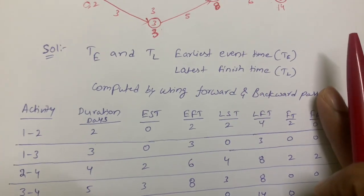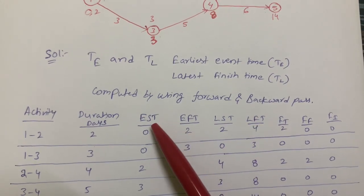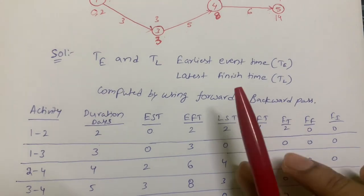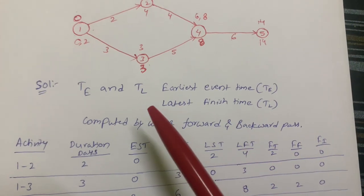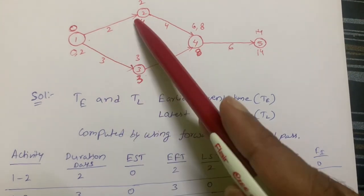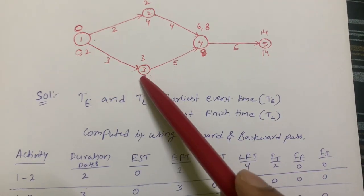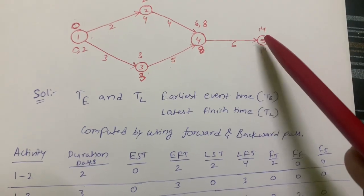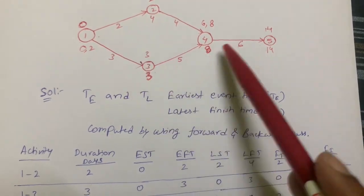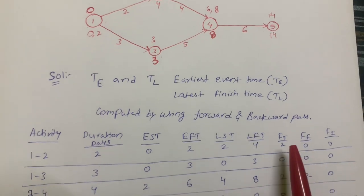Next I'm going to calculate EST, EFT, LST, and LFT — earliest start time, earliest finish time, latest start time, and latest finish time. To calculate these we use forward and backward pass. The forward pass follows paths 1→2→4→5 and 1→3→4→5. The backward pass follows 5→4→2→1 and 5→4→3→1.